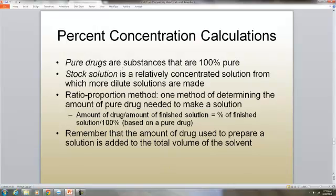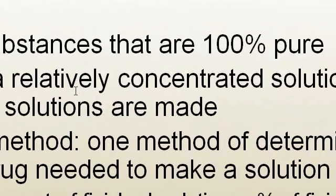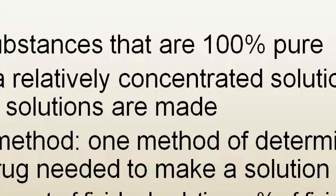Pure drugs are substances that are 100% pure. Stock solution is a relatively concentrated solution from which more dilute solutions are made. The ratio proportion method is one method of determining the amount of pure drug needed to make a solution — you take the amount of drug divided by the amount of finished solution, and that gives you the percent of finished solution over 100 based on a pure drug. Remember that the amount of drug used to prepare a solution is added to the total volume of the solvent.